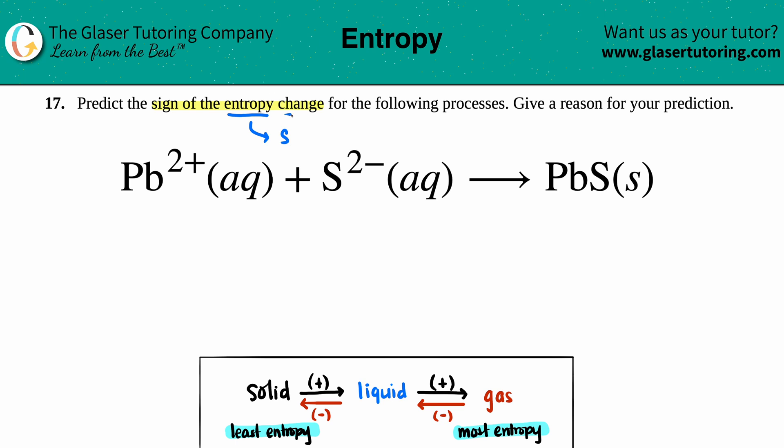Change represents that delta sign, so in this case we're really searching for what that ΔS is going to be. Is the entropy going to be positive, negative, or zero?